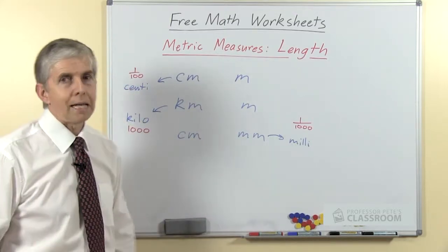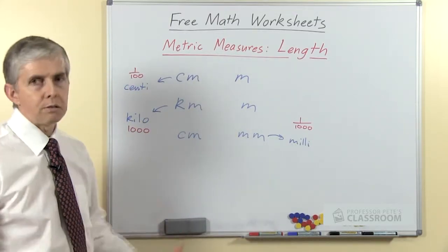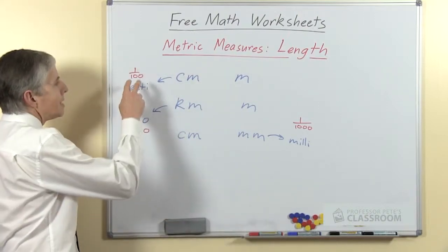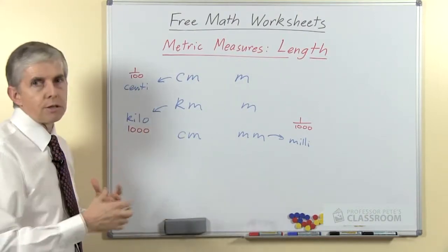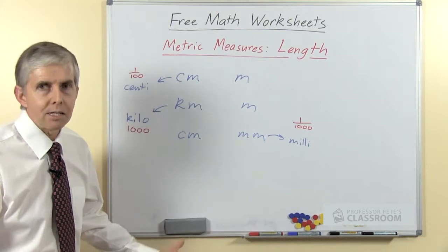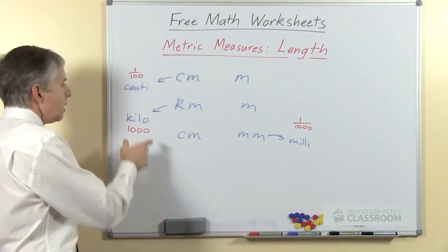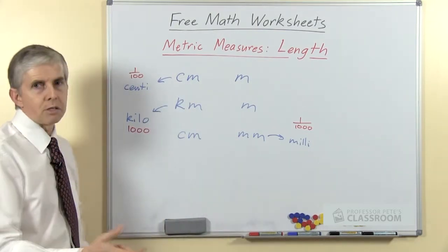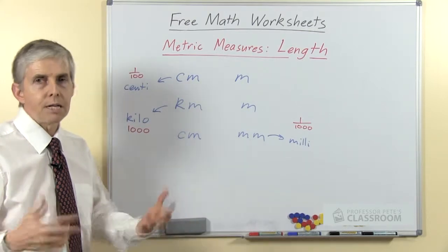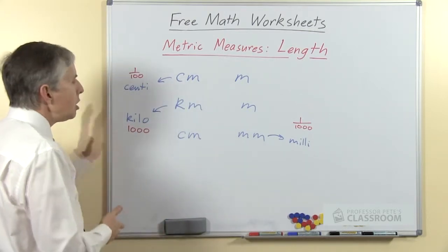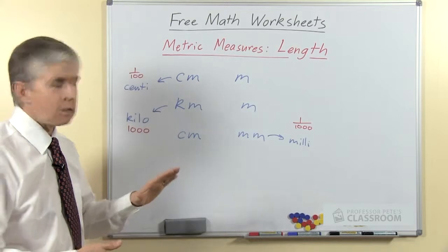In the metric system, because it was planned in advance, it's all based on 10. A centi anything is a hundredth of something, so a centiliter is a hundredth of a liter. A kilo of anything is a thousand, so a kilowatt is a thousand watts. We use those numbers when we're doing the conversion.